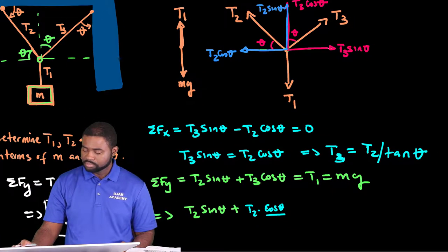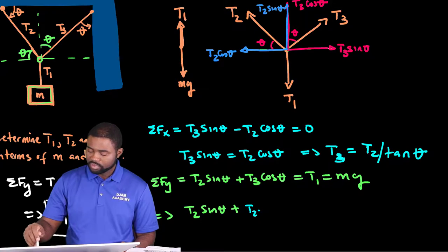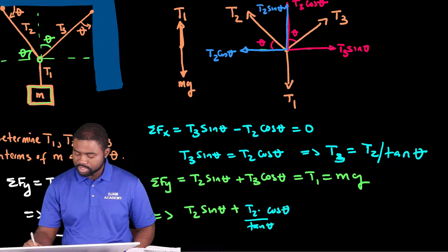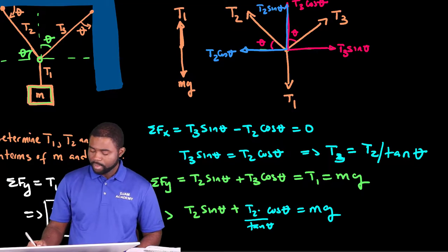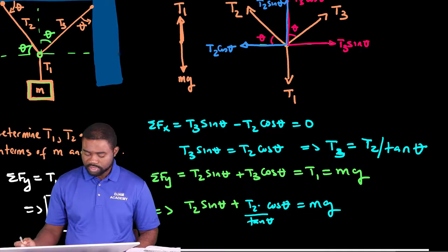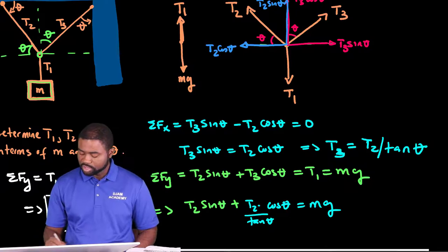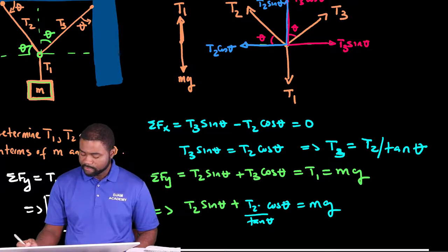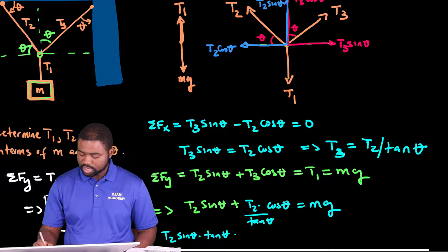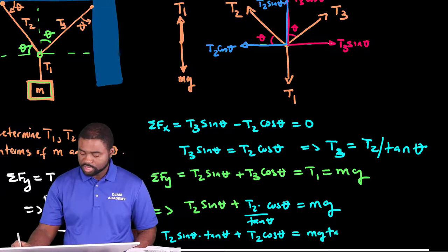So, we will have T2 divided by tan theta, all multiplied by cosine theta. This will be equal to mg. So, the next thing that we can do is to recognize that we can multiply throughout by tan theta. So, we will have T2 tan theta plus T2 cosine theta is equal to mg multiplied by the tangent of theta.